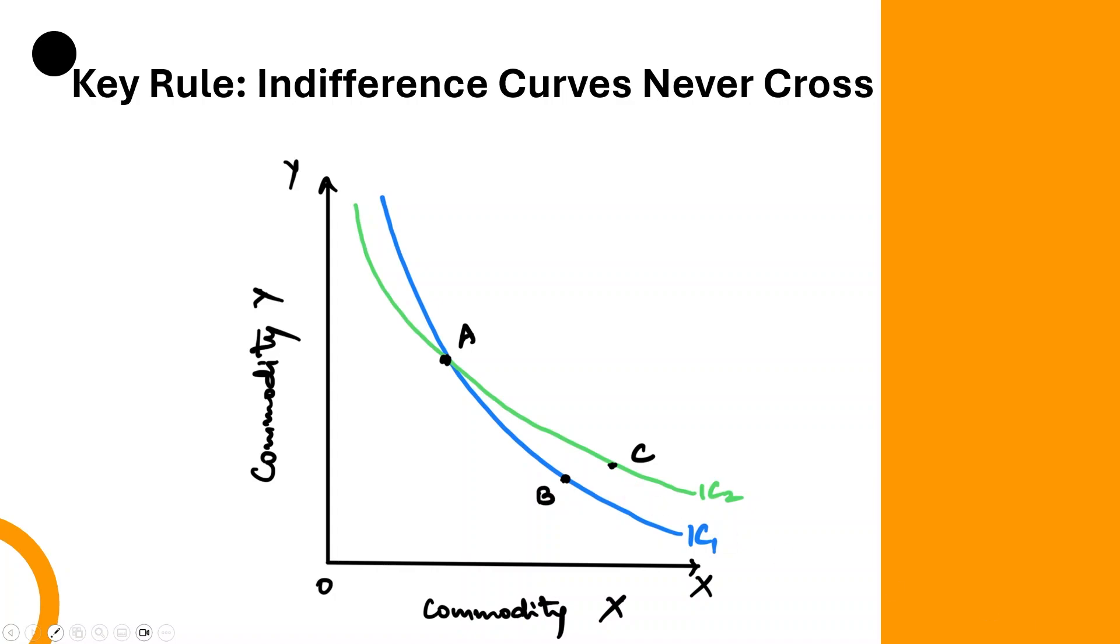Because you are showing that two different indifference curves are giving the same level of satisfaction to the consumer. Always remember that each indifference curve represents a specific level of satisfaction, and crossing curves would imply a consumer is equally happy with two different satisfaction levels, which is quite impossible.